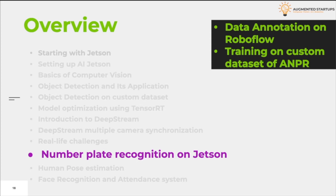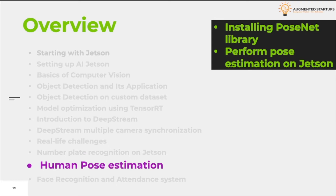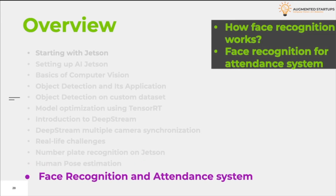We will annotate number plate datasets and train our custom model for number plate detection and try this model on the Jetson. Then we will move on to another interesting application of computer vision: human pose estimation. We will use the PoseNet library for that purpose on the Jetson. In the last part of this module we will set up our Jetson for a real-time attendance system using face recognition. That was all about the overview of this course.